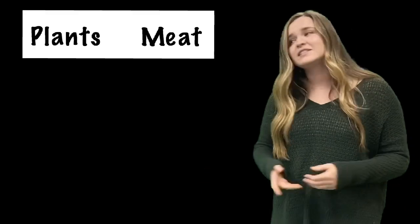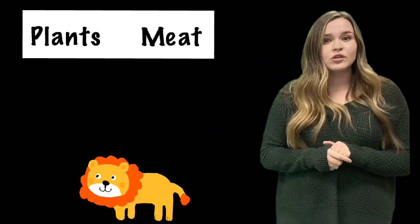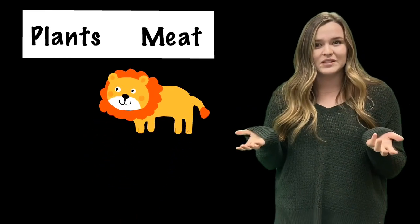We could also sort animals by what they eat. Some only eat plants while some eat meat. You can sort them into those two groups. Today, you get to do a sorting animal activity. You're going to sort the animals by three different characteristics.